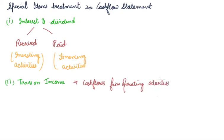But if taxes on income are given in the adjustment, we need to make the double entry: first we add them back into the profit, then we subtract them from the operating activity. This will be clearer when we do a numerical example.